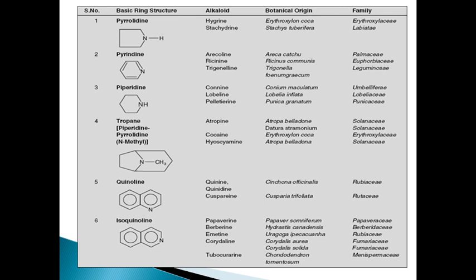The third class is piperidine. It is also a six-membered ring having a nitrogen heterocyclic six-membered ring. Examples of alkaloids are coniine and lobeline. The botanical origin of coniine is Conium maculatum; lobeline comes from Lobelia inflata. The families are Apiaceae and Lobeliaceae.